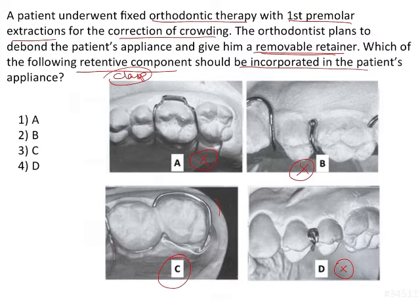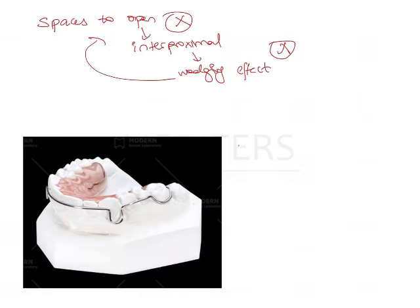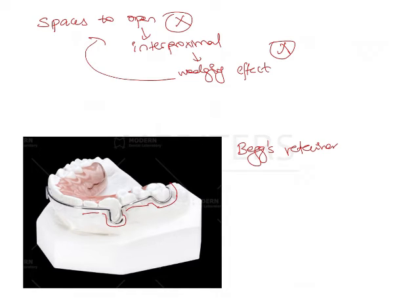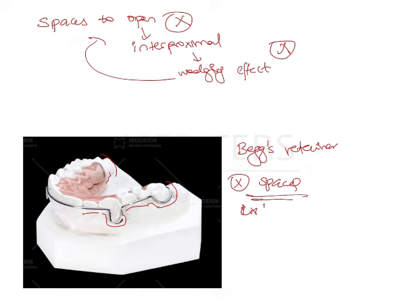Another type of design used in extraction cases is the Begg's retainer. In a Begg's retainer, the labial bow itself is adapted to run to the last molar, then comes into the arch and is embedded inside the acrylic. There is no wire component running interproximally, so there is no opening up of spaces — making it indicated for extraction cases.